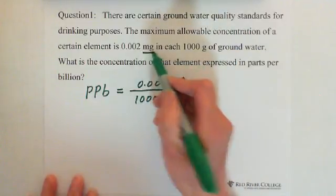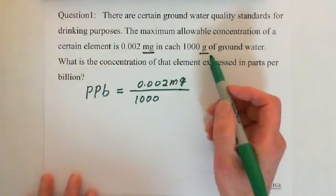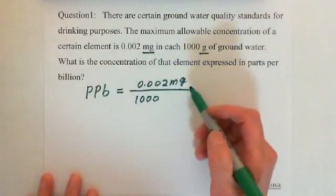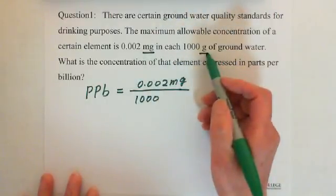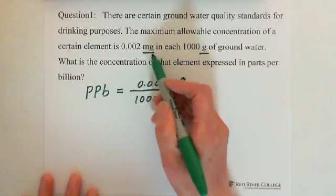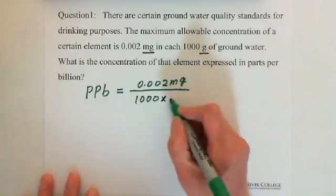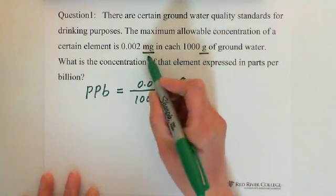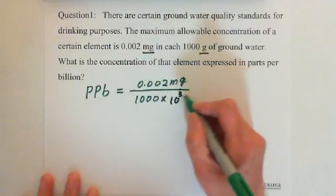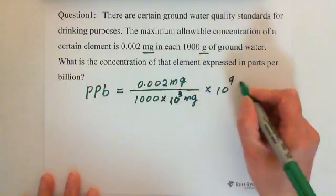These are different units, so we need to change them to the same units. Keep milligrams. To convert the thousand grams to milligrams: grams is the larger unit, milligrams is the smaller unit. To convert from grams to milligrams, just multiply by 1000, which is 10 to the 3rd exponent. Then multiply by 10 to the 9th exponent per billion.